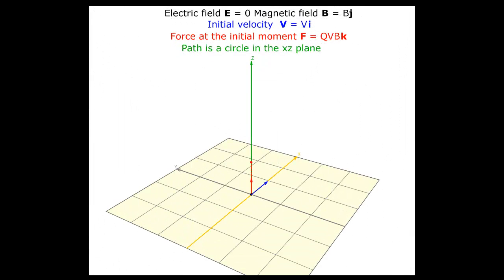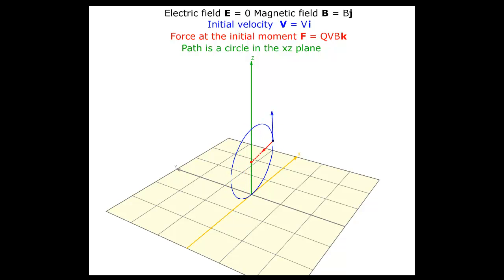The magnetic field is now in the y-direction. The force on the charged particle at the initial moment is in the z-direction. The plane of the circular path is the x-z plane, which is the plane perpendicular to the magnetic field.